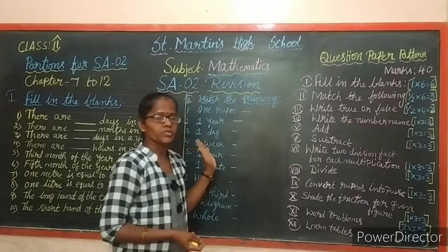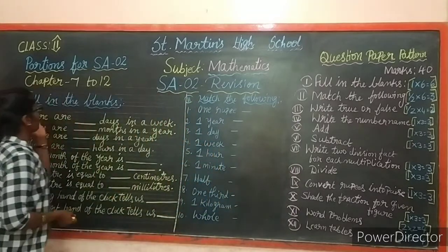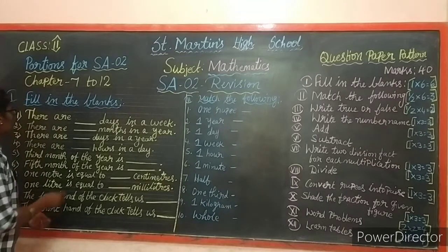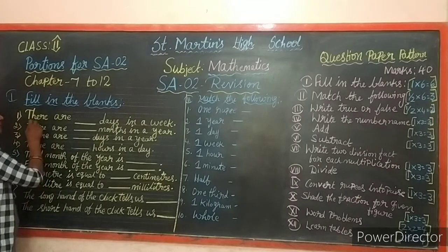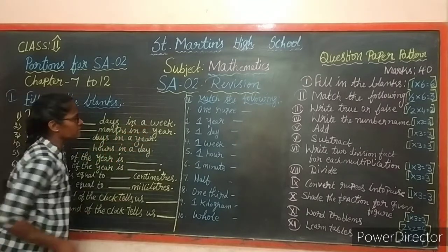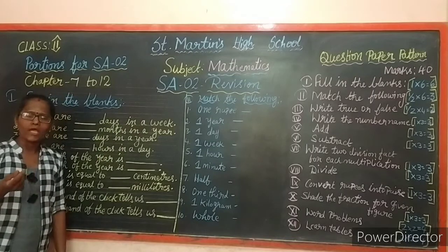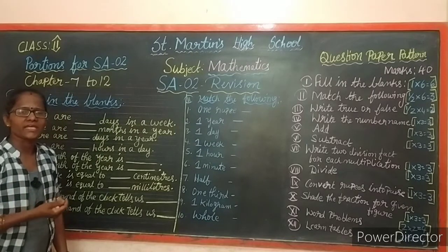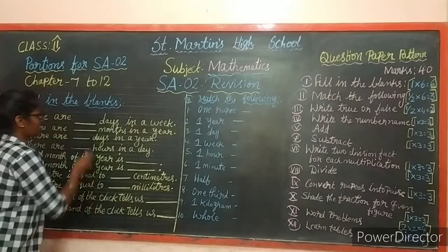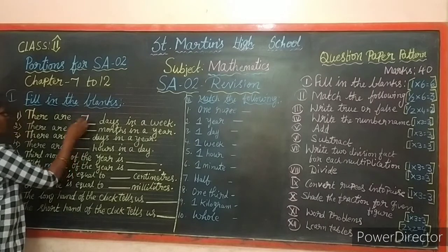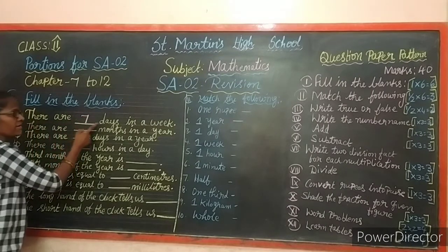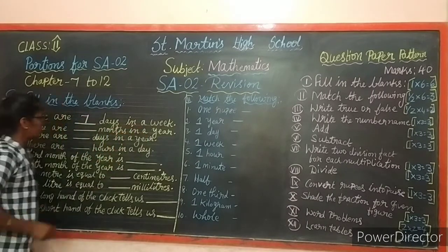Now we can move to revise, children. First, let us revise fill in the blanks. First one: there are dash days in a week. How many days are there in a week? There are 7 days in a week.